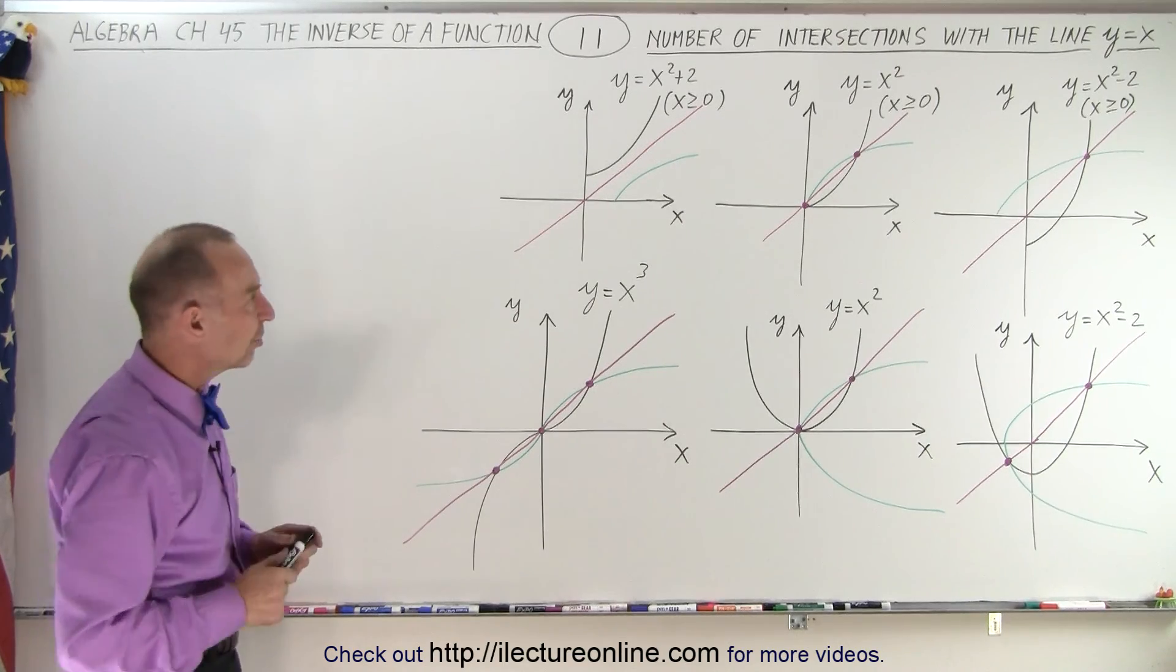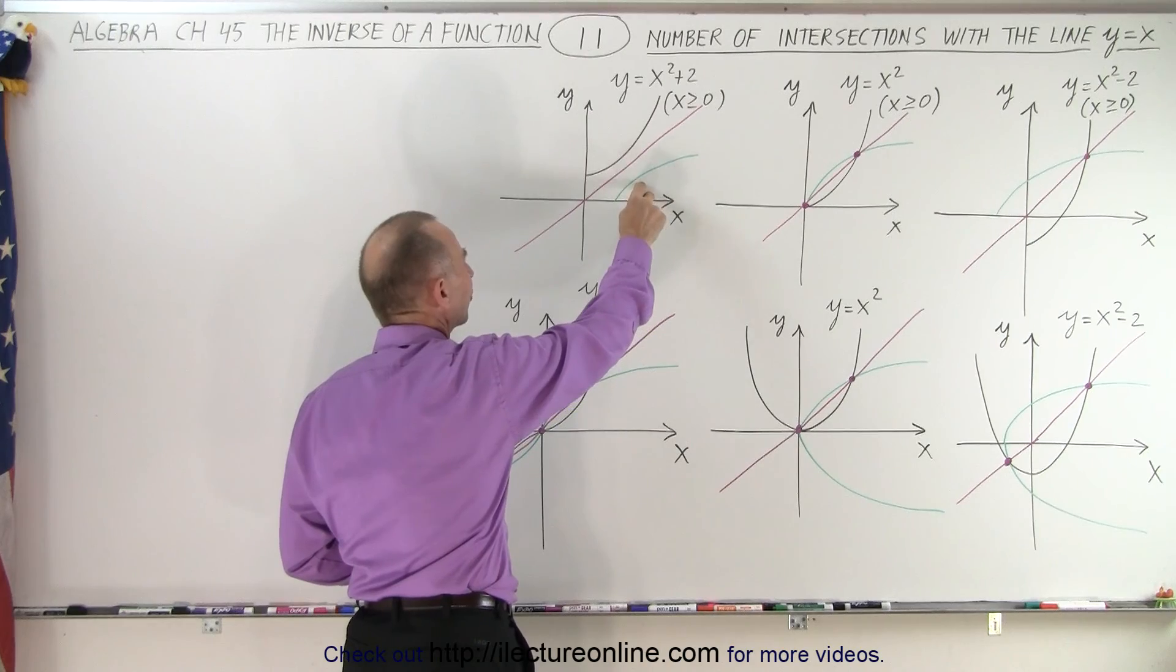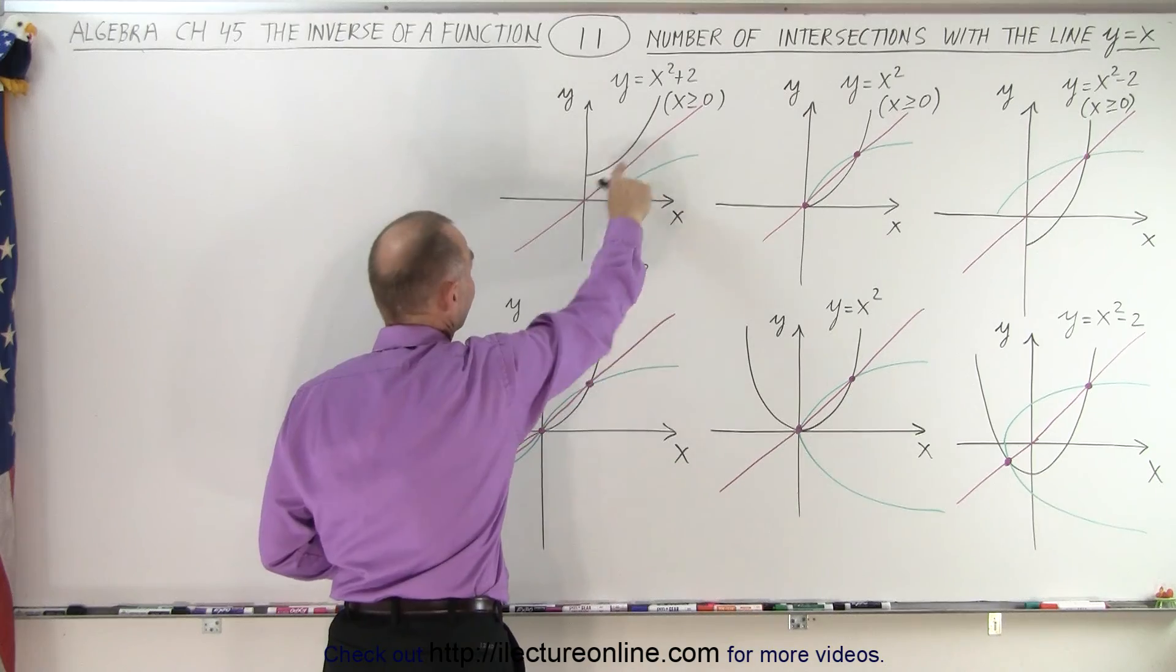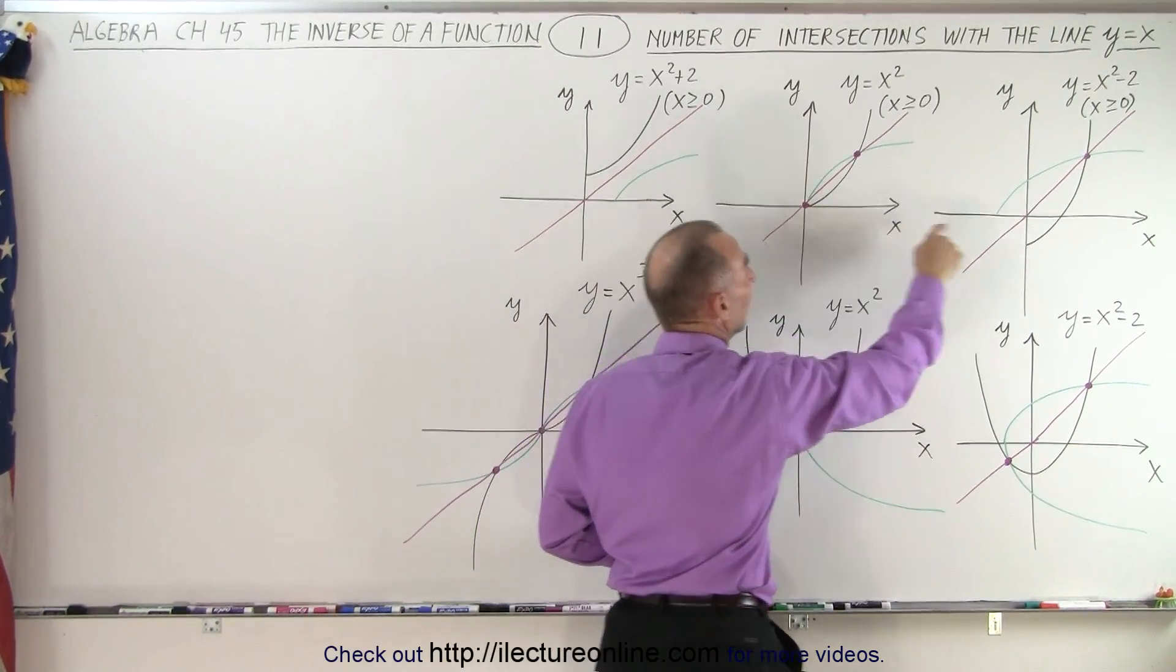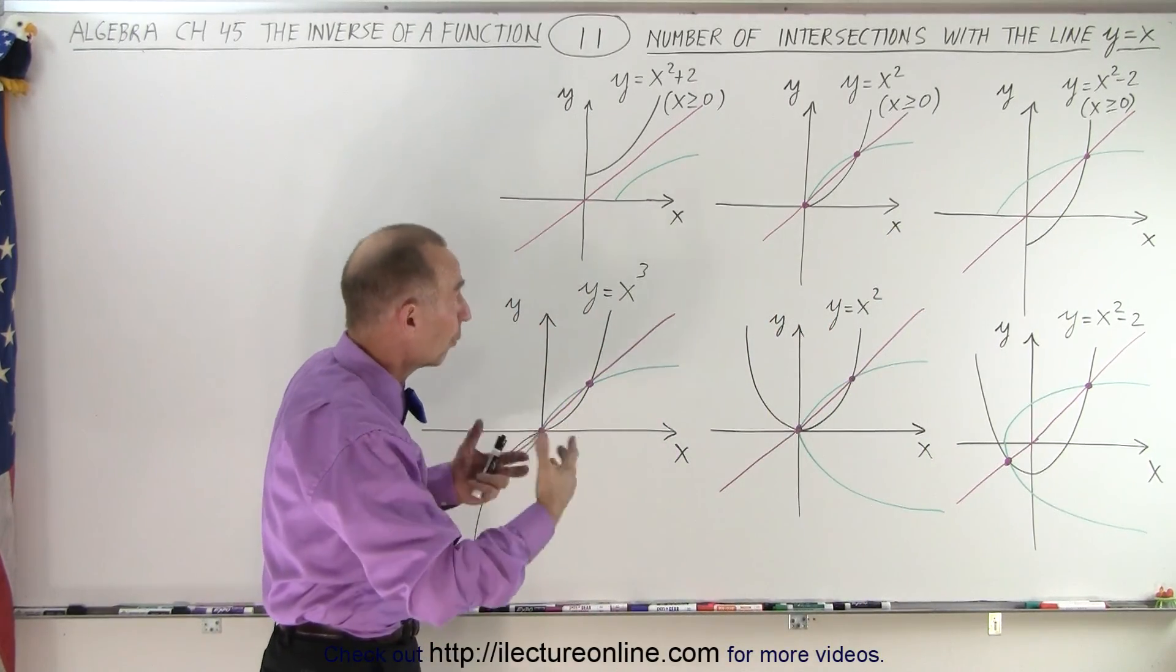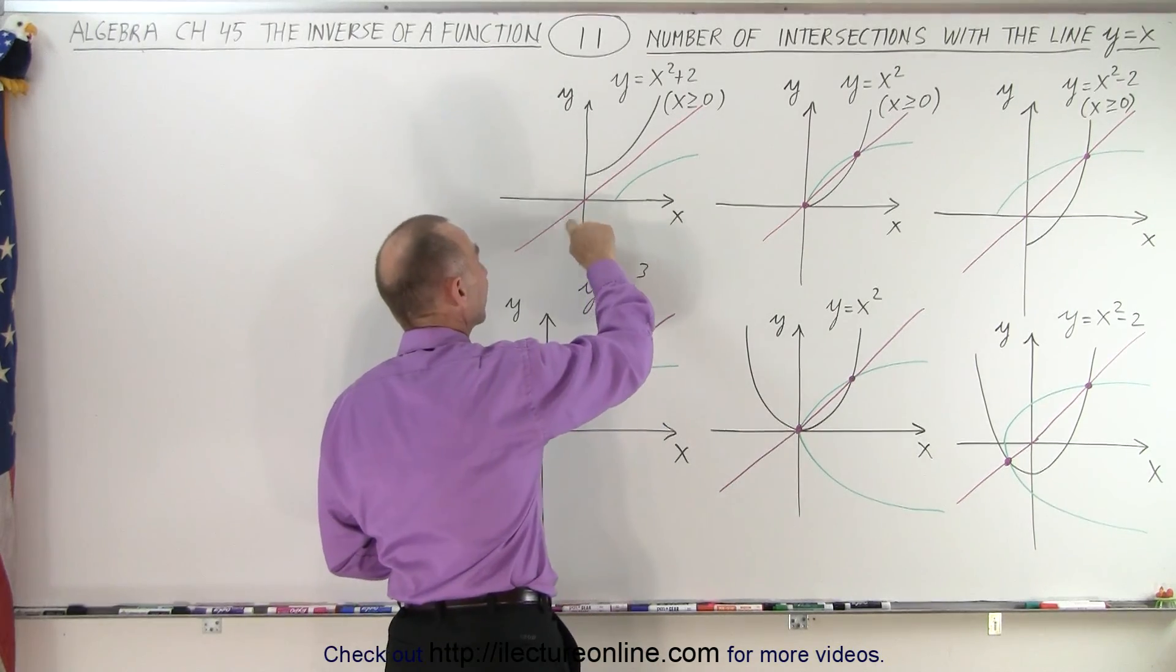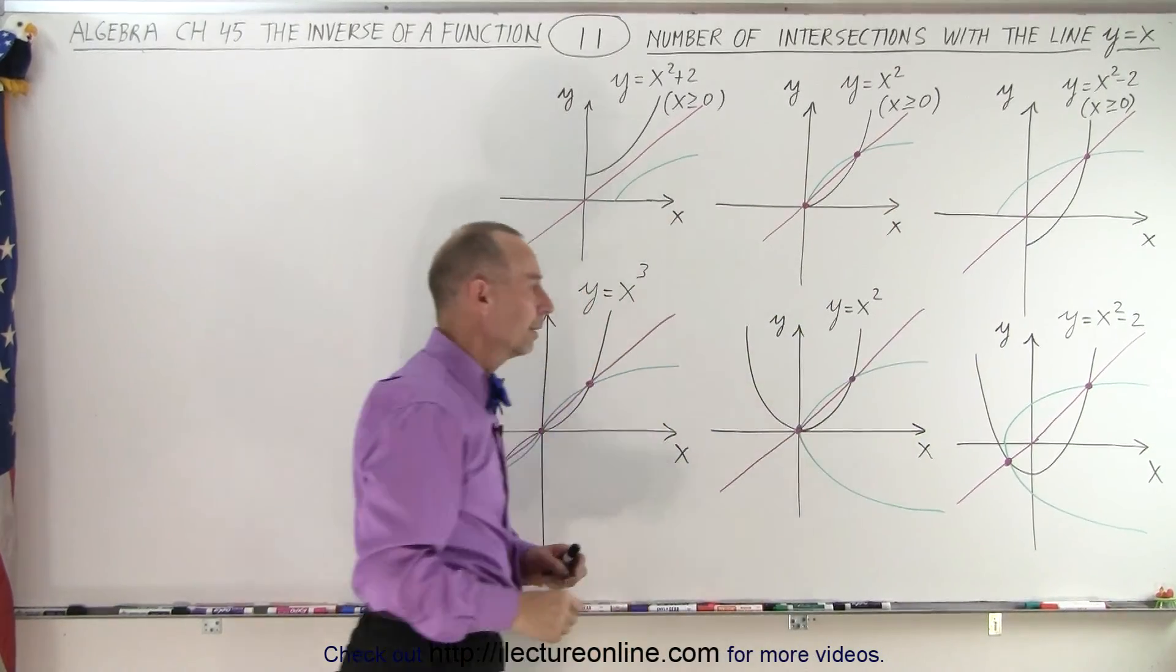But we're interested in where the function and the inverse of the function cross the y equals x line. Now here you can see that it does not cross the y equals x line, not even once. Here it crosses twice, and here it crosses once. It turns out that for an even function, a function where you have x squared somewhere in the function, the number of times that it can cross the y equals x line can be 0, 1, or 2.